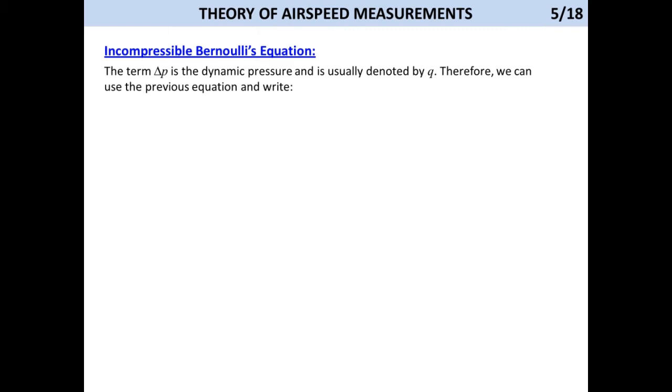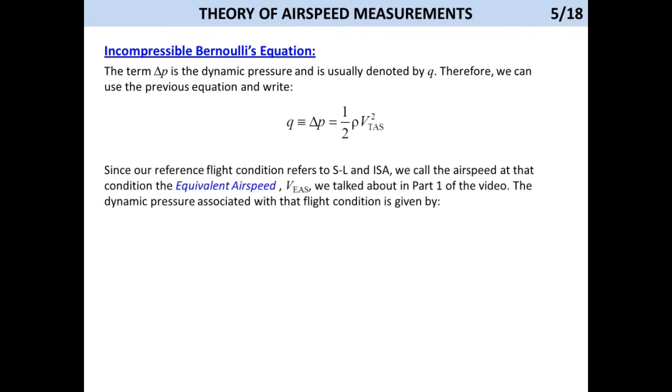Therefore, we can use the previous equation and write, since our reference flight condition refers to sea level and standard atmosphere, we call the airspeed at that condition the equivalent airspeed, like we talked about in part 1. The dynamic pressure associated with that flight condition is given by...